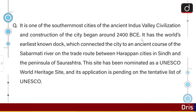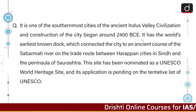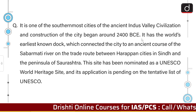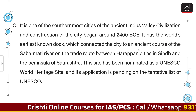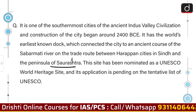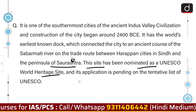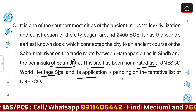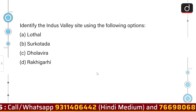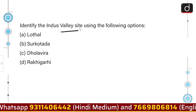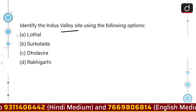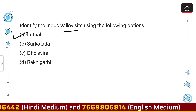It is one of the southernmost cities of the ancient Indus Valley Civilization and construction of the city began around 2400 BCE. It has the world's earliest known dock, which connected the city to an ancient course of the Sabarmati river on the trade route between Harappan cities in Sindh and the peninsula of Saurashtra. This site has been nominated as a UNESCO World Heritage Site, pending on the tentative list. We have to identify the Indus Valley site — the correct answer is Lothal.